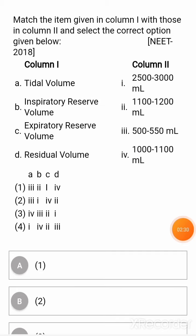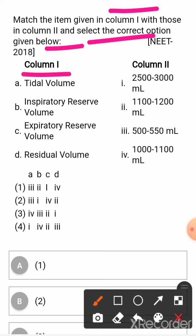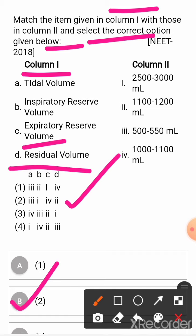Next question: match the items given in Column 1 with those in Column 2 and select the correct option. Column 1 includes: tidal volume, inspiratory reserve volume, expiratory reserve volume, and residual volume. The correct answers are A and B respectively.